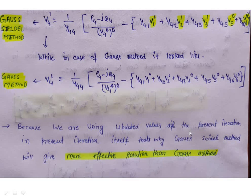If we expand this equation, we will see that voltages v1, v2 and v3 are updated values — the values obtained in the first iteration itself. We are calculating v4 in the first iteration and we are putting the first-iteration values for v1, v2 and v3. While v5 and v6 are taken from the previous iteration; because we are in the first iteration, these values are the initial assumed values.